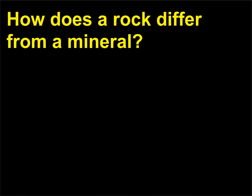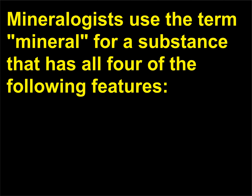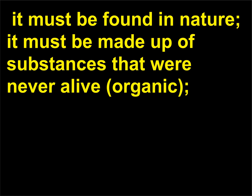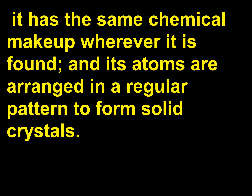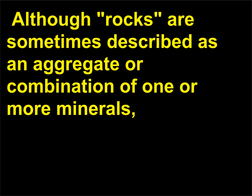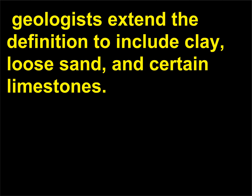How does a rock differ from a mineral? Mineralogists use the term mineral for a substance that has all four of the following features: it must be found in nature; it must be made up of substances that were never alive (inorganic); it has the same chemical makeup wherever it is found; and its atoms are arranged in a regular pattern to form solid crystals. Although rocks are sometimes described as an aggregate or combination of one or more minerals, geologists extend the definition to include clay, loose sand, and certain limestones.